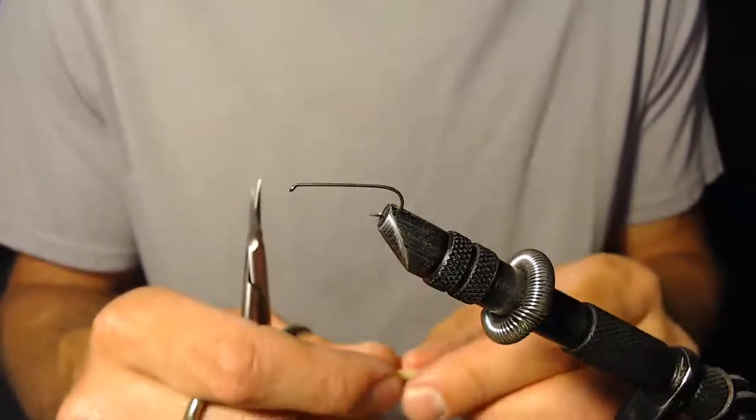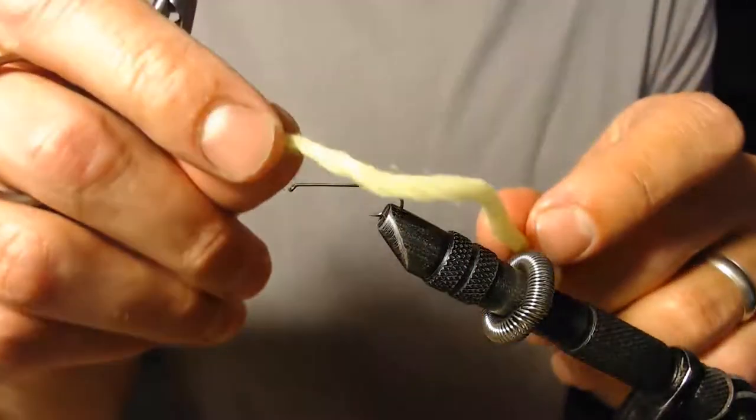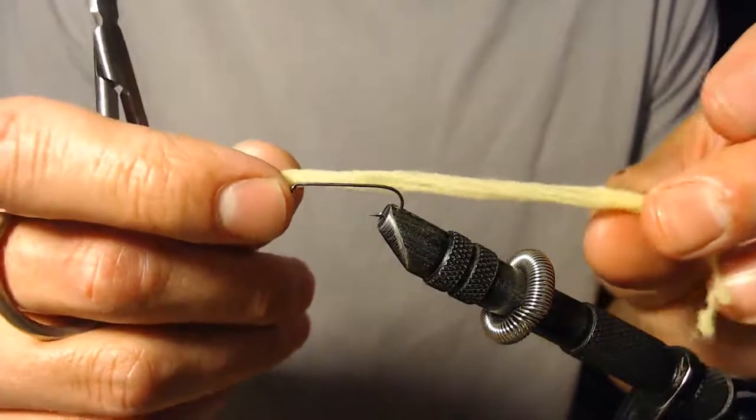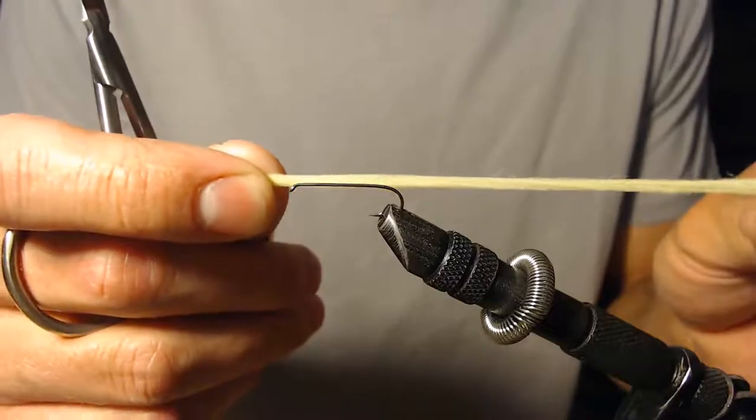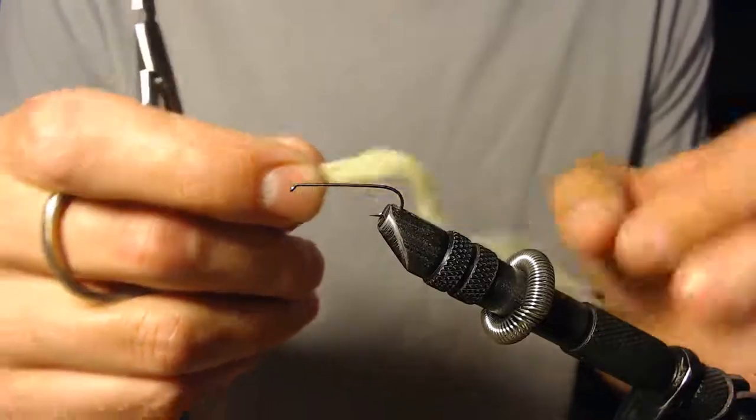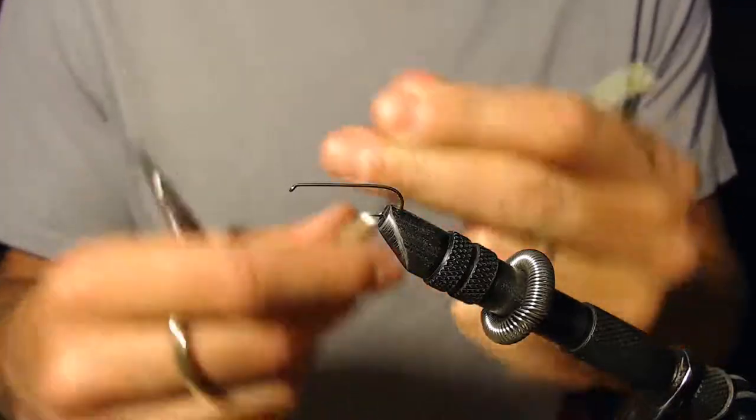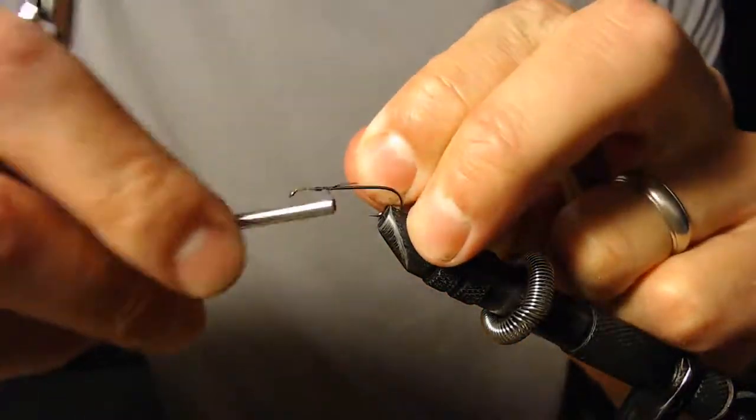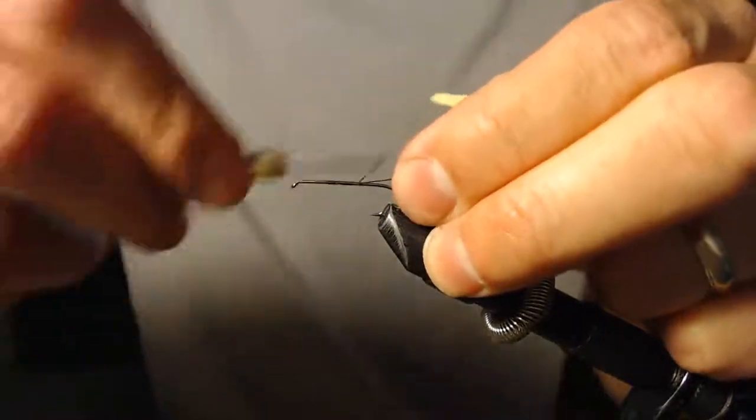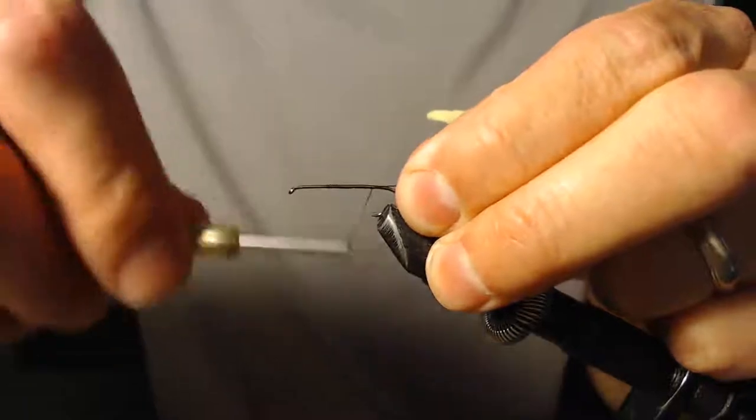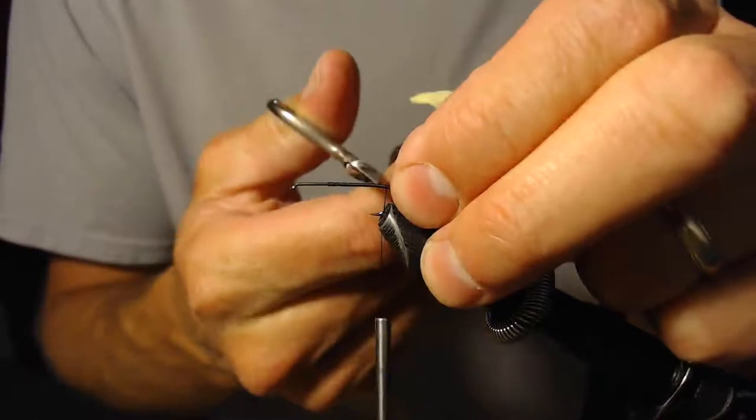Here we go, little foam grasshopper pattern. To start off with I'm going to use a little bit of yarn, this is actually egg yarn you can use to tie egg patterns, but I prefer to use it for the body of this fly. I'm going to use black thread today, sometimes I'll use a lighter colored thread, yellow or tan, but black today for one because it's easier to see when you're watching this on a video. Get my thread back to the back of the hook.